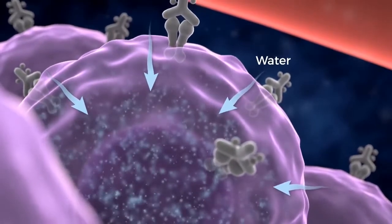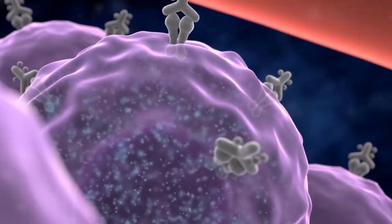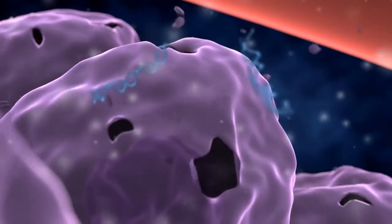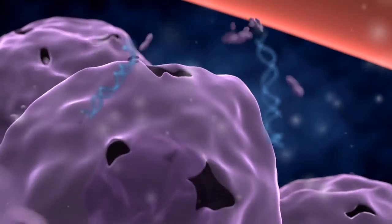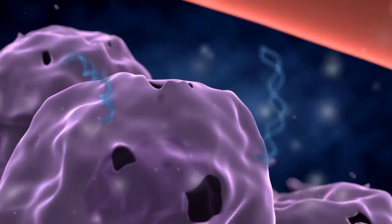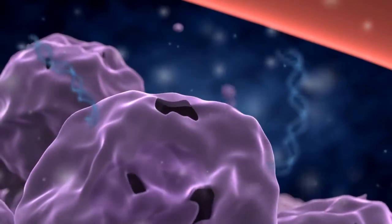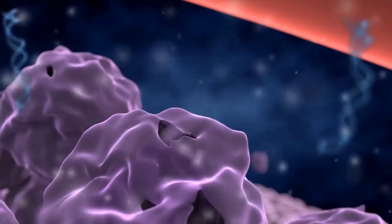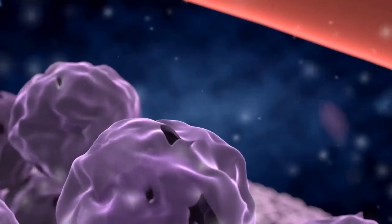Increased pressure within the swollen cell causes the membrane to burst, releasing intracellular contents such as proteins, DNA, and RNA. The cell then becomes smaller and shrunken in shape, a process known as necrosis.